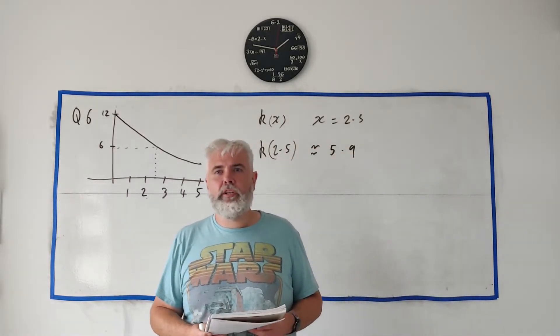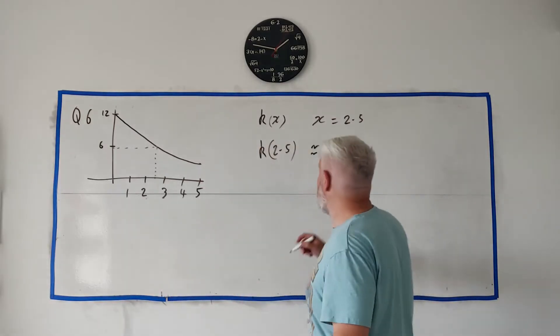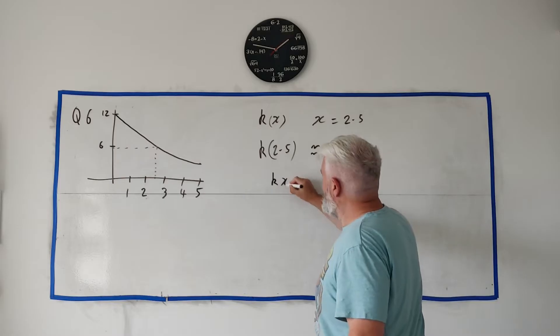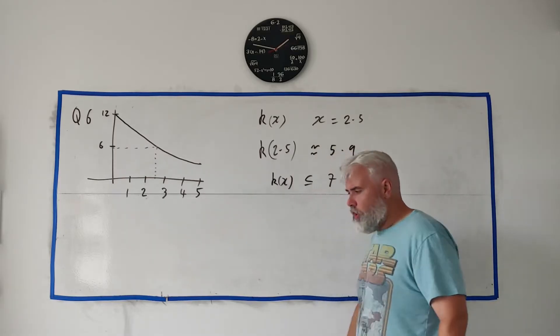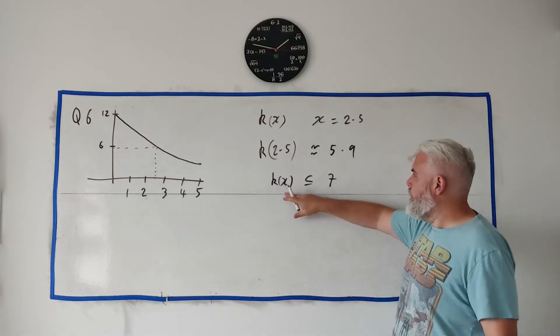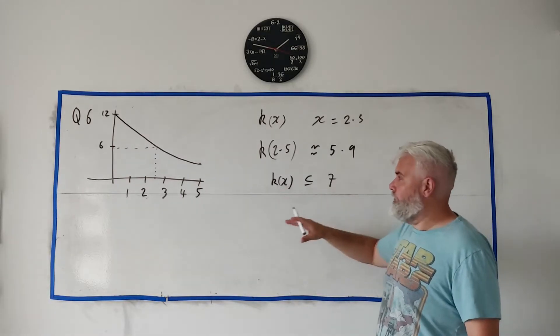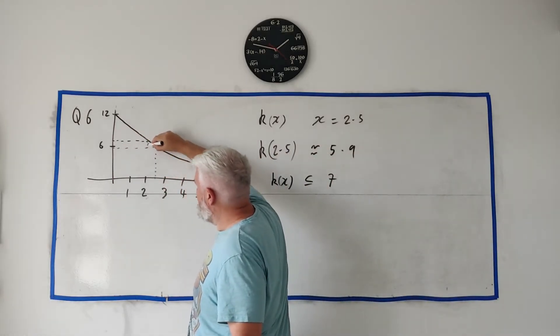They really do want to see these lines though, so make sure you get a pencil, dot some lines in, show your work. For part two, they want to estimate the range of values for x for which k(x) is less than or equal to seven. So how do we do that?